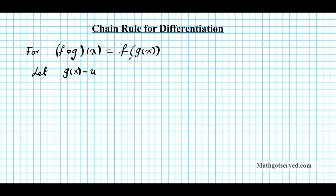So if we assign the inner function a variable letter u, what does the chain rule tell us? Well it tells us that the derivative of f of g of x — f prime of g of x — is equal to the derivative of the parent function with only the inner function fixed, times the derivative of the inner function.